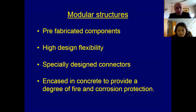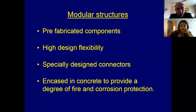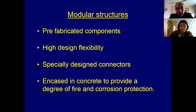Modular structures are mostly prefabricated and produced at special factories. The main feature is high design flexibility. To construct a building from modular structures, special connectors must be designed — each building requires its own specific connectors. As with other steel-based constructions, modular structures made from steel must have sufficient protection from corrosion and fire, since both can quickly destroy the structure.